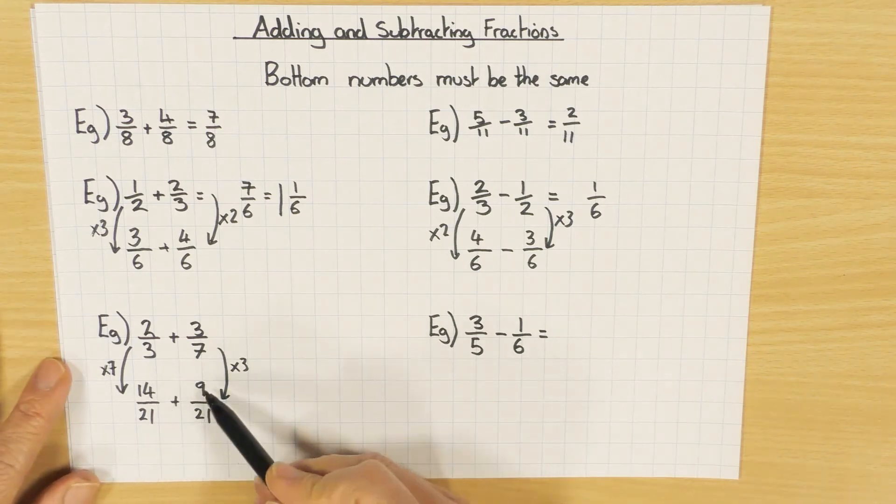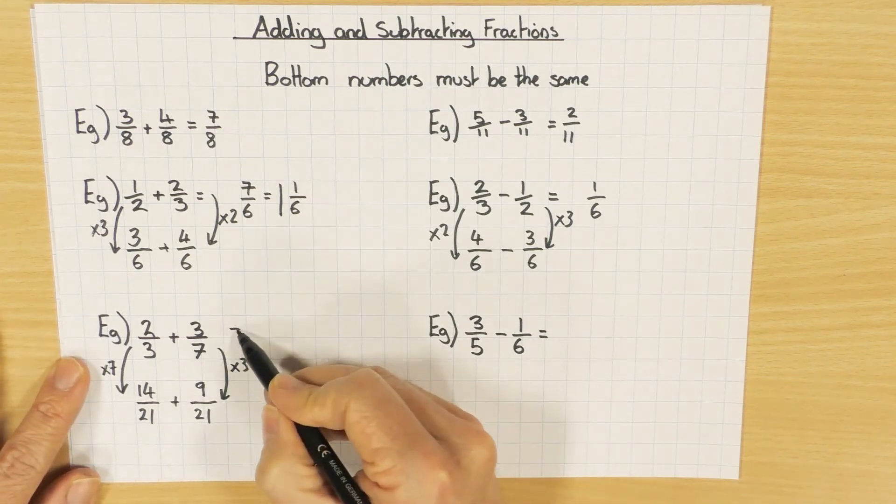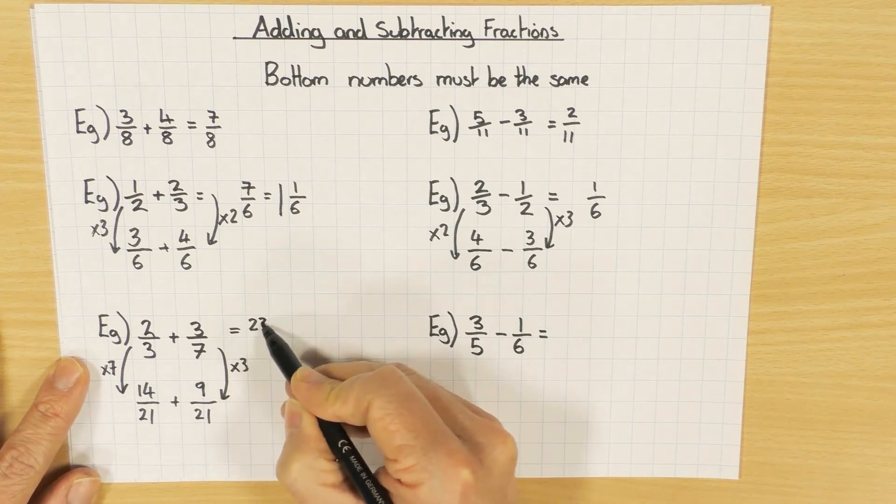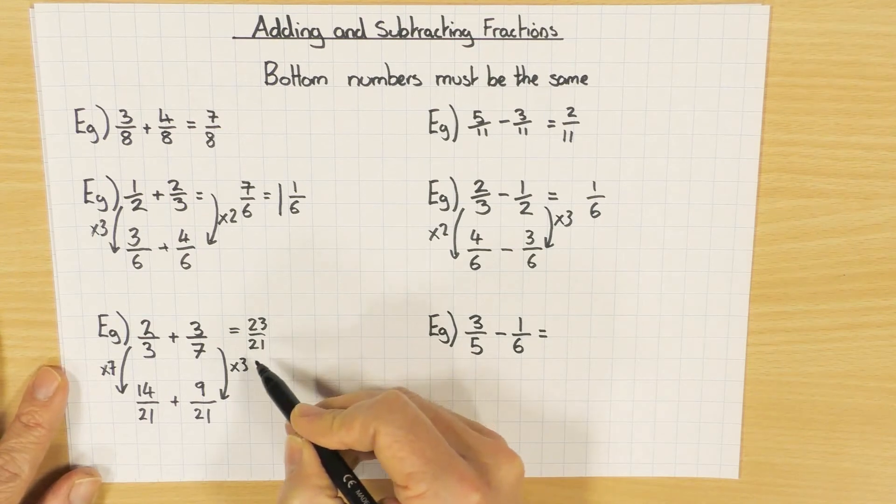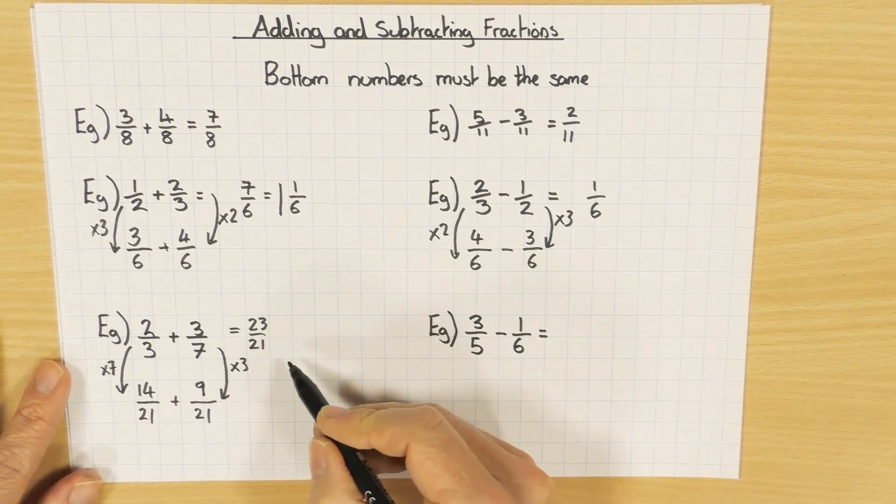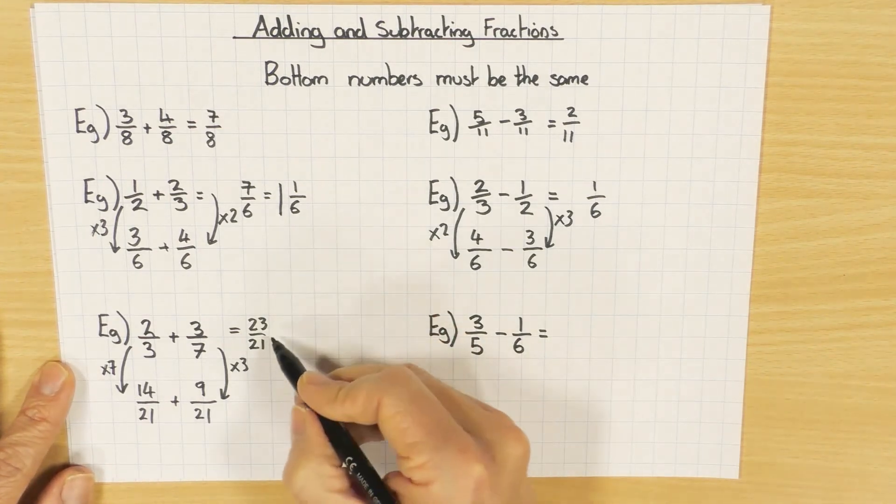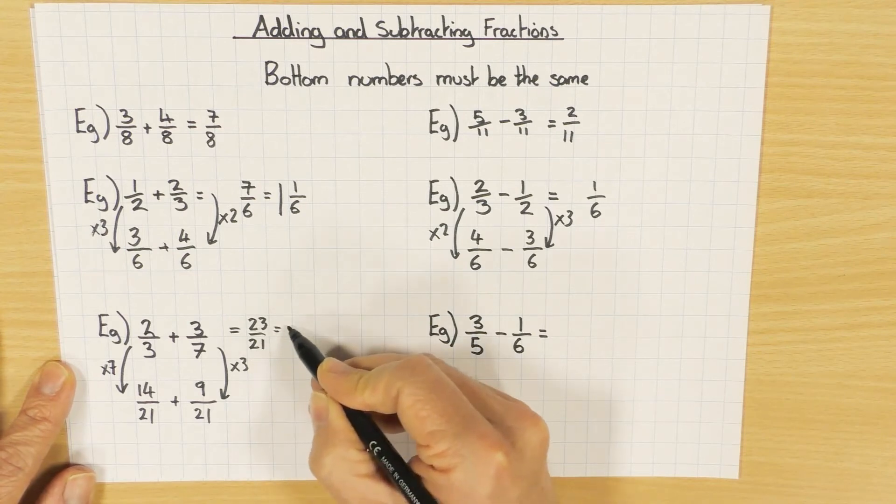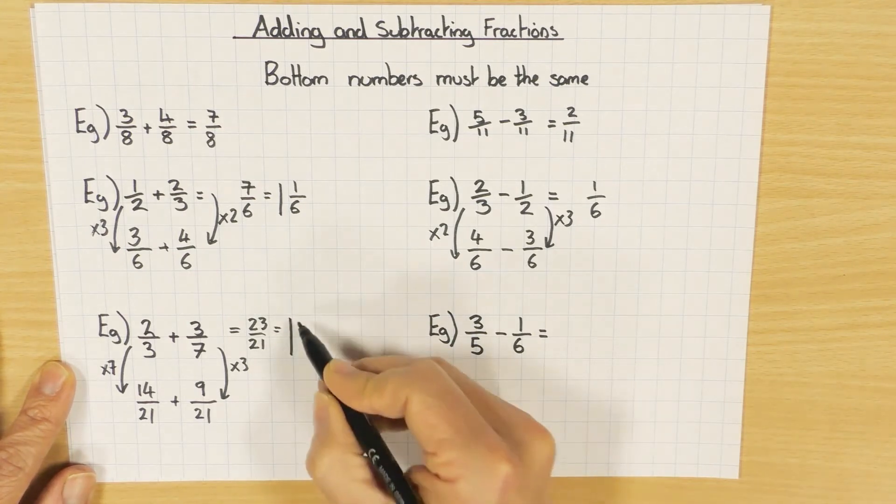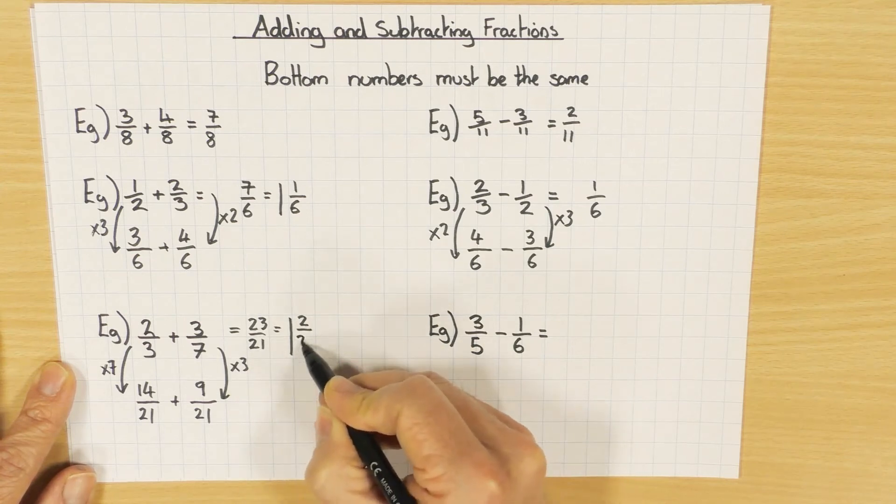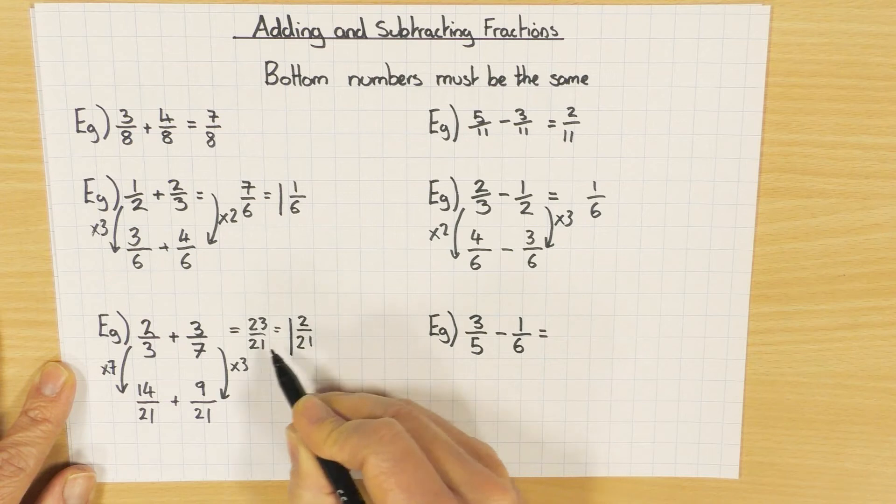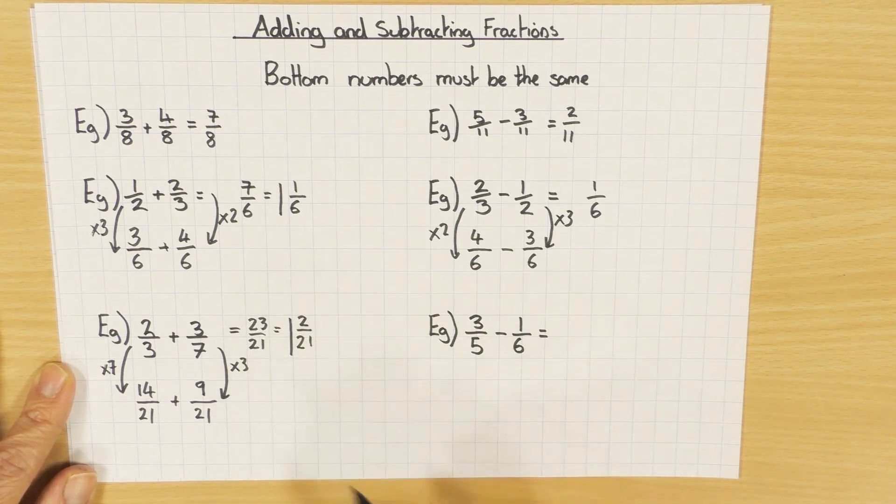14 over 21 plus 9 over 21 equals 23 over 21. That's a top heavy fraction, it's good, but it might ask you to write it as a mixed number. So just like above, how many 21s go into 23? Once, remainder two. The denominator will stay the same. Those two are the same things: top heavy fraction or improper fraction, mixed number.